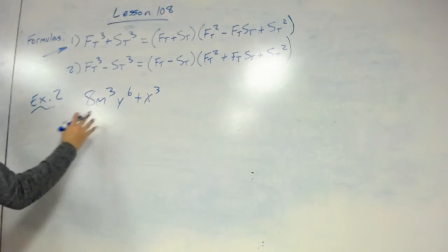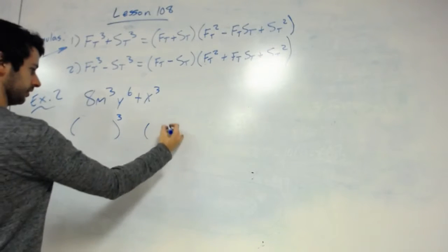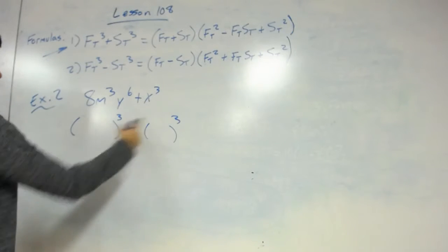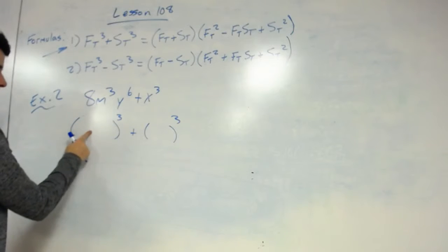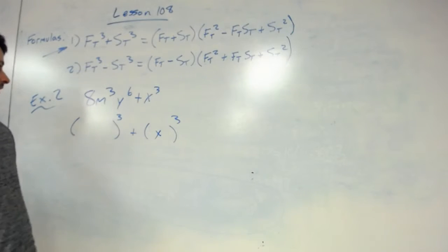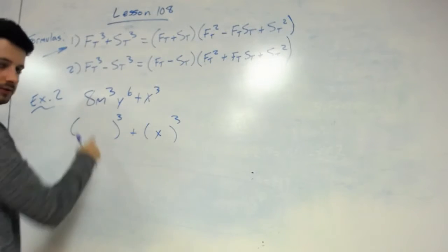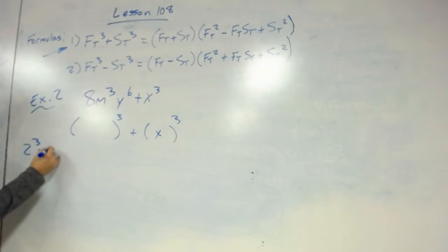When we factor out the cubes, because we already know we've got to be in this form here, because we've got to figure out the first thing and the second thing. Well, this one's easy. It's just x. It's alone. What cubed equals 8? Well, 2 cubed equals 8, so we plug that in there.